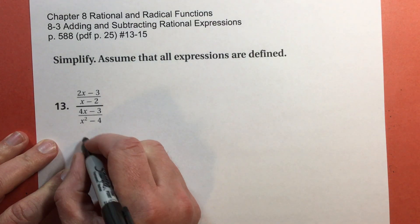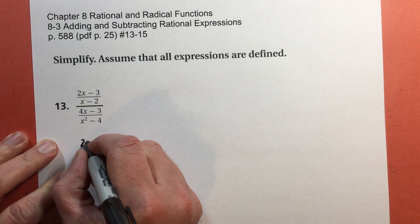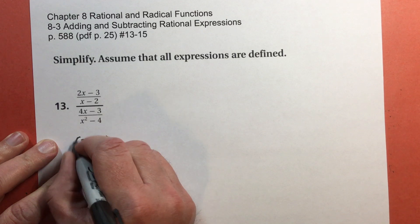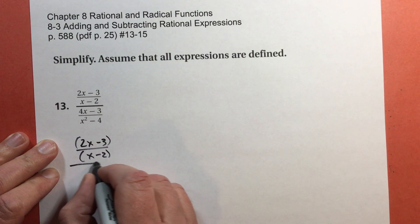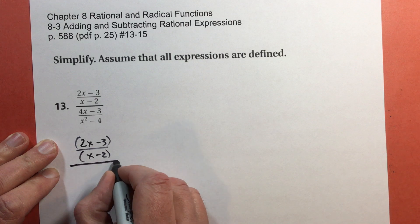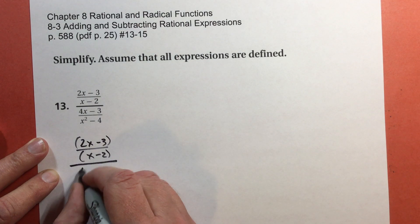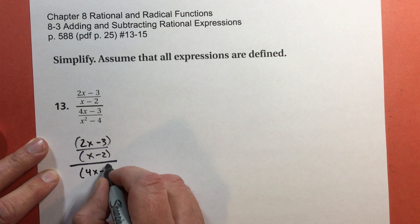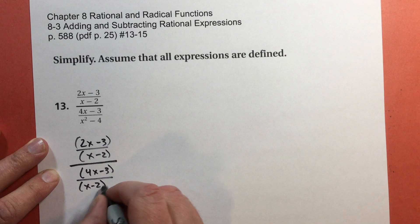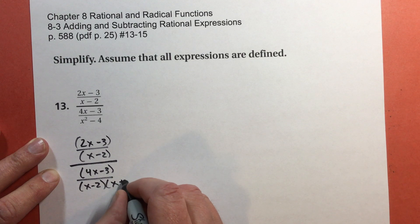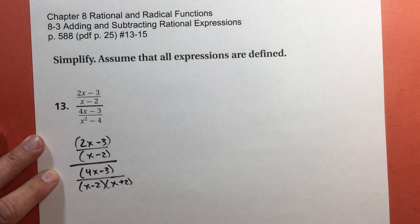So I'm going to rewrite this, except I'm going to factor this denominator. So I've got 2x subtract 3 over x subtract 2, and that whole thing is over, and usually I try to draw it a little bit darker so you can see, 4x subtract 3 over x subtract 2 times x plus 2.